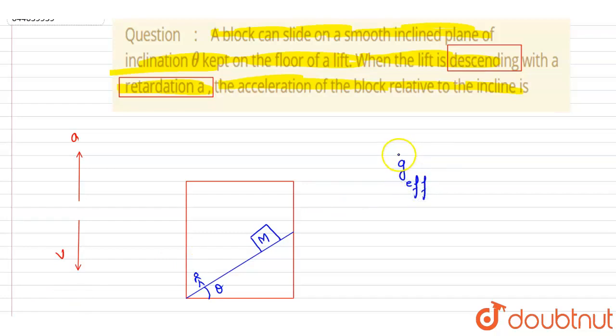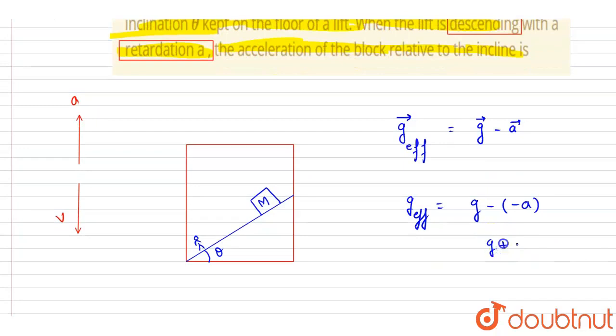So if I write down in vector form, it is g vector minus a vector, where a vector is the acceleration of the frame. If you can see, the acceleration is in upward direction, so taking downward as positive we can write down. I will mention it: taking downward as positive.